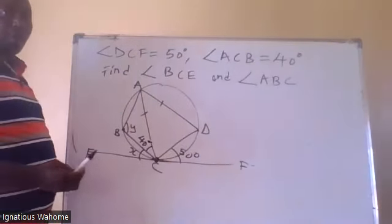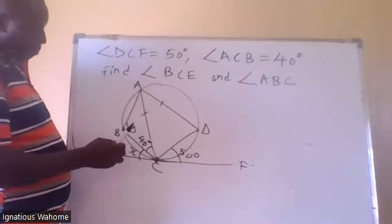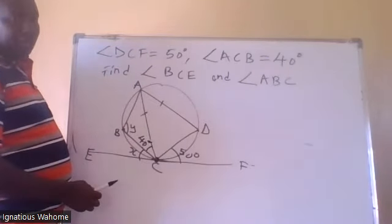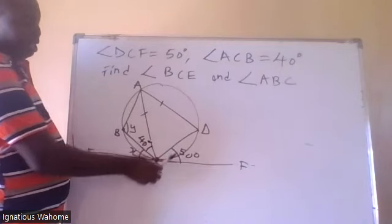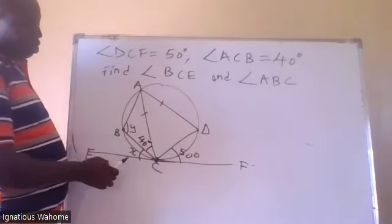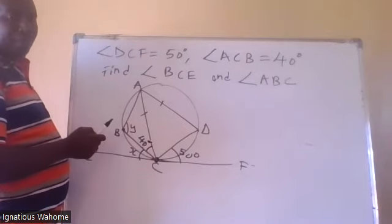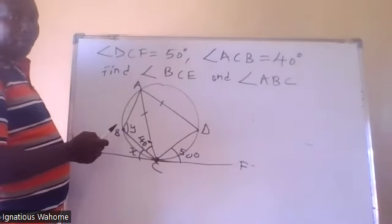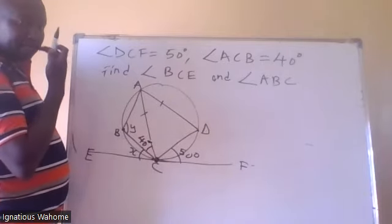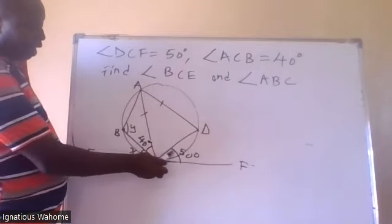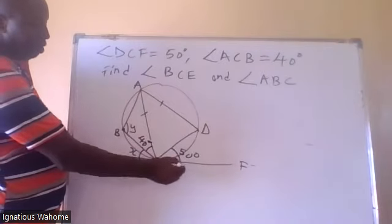Let's go to this question: why we have the angle subtended by a tangent and a chord. So first, identify the chord — the chord here is CD. That makes an angle of 50 degrees with tangent ECF. This angle is 50.